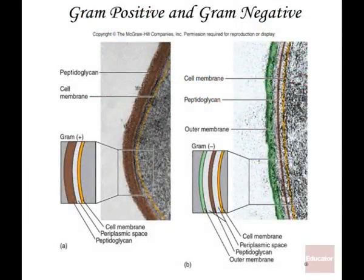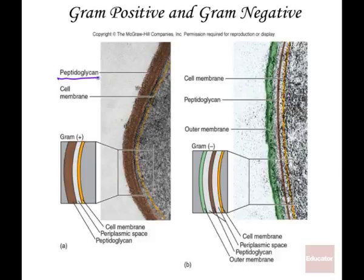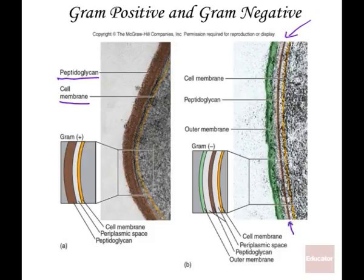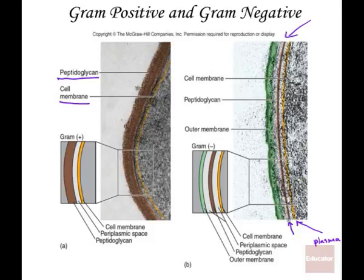Here is an electron micrograph showing a cross-section of gram-positive and gram-negative bacteria. In gram-positive bacteria, the peptidoglycan layer is fairly thick and is the most external layer, with the plasma membrane underneath — essentially a two-layered system. In gram-negative bacteria, there is an outer membrane layer, underneath which the peptidoglycan is sandwiched between the outer membrane and the plasma membrane. The peptidoglycan in the gram-negative cell is actually thinner than in the gram-positive cell.